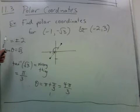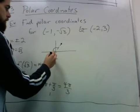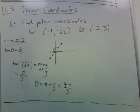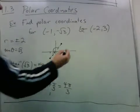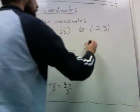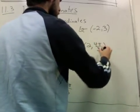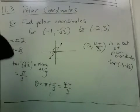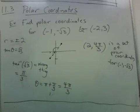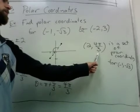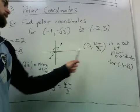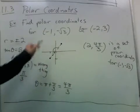That's in the case when r is positive. So let's write that down: (2, 4π/3). And we could also add any multiple of 2π to this because that doesn't change the position of the angle.